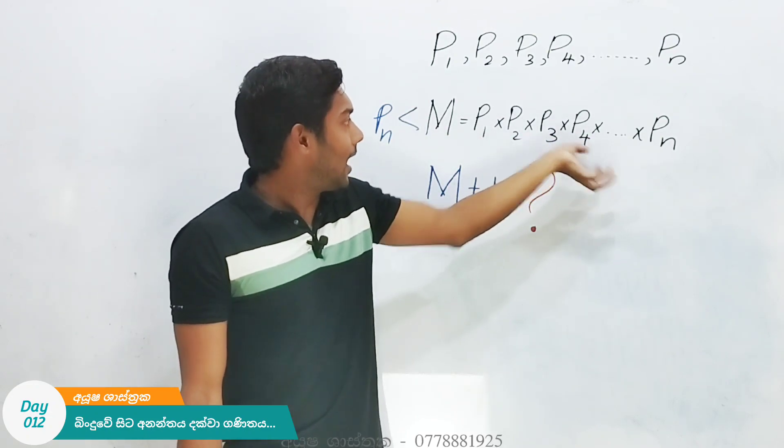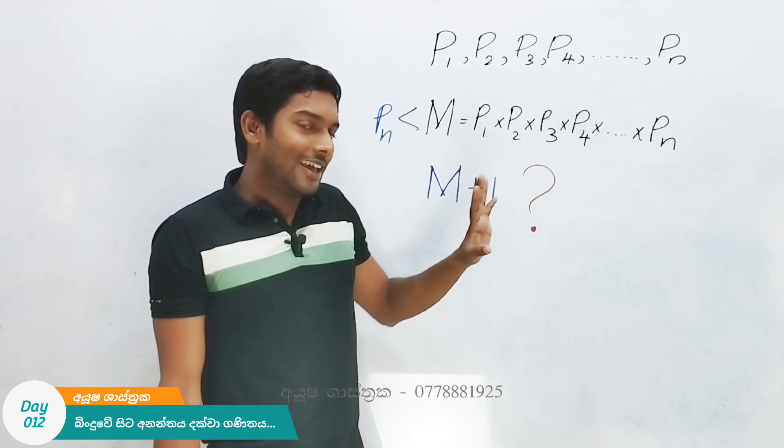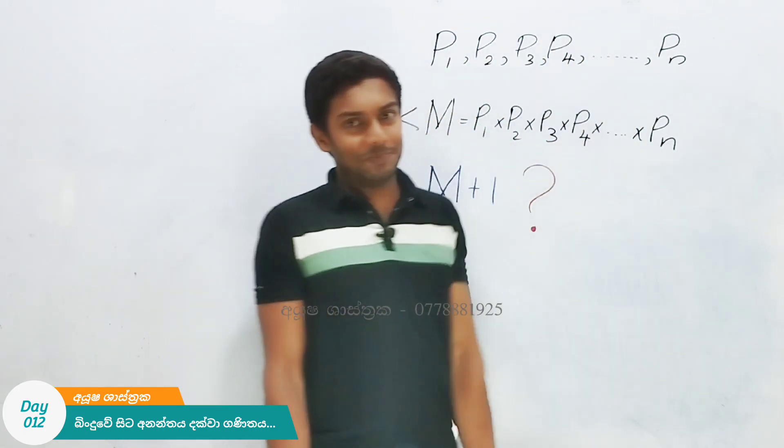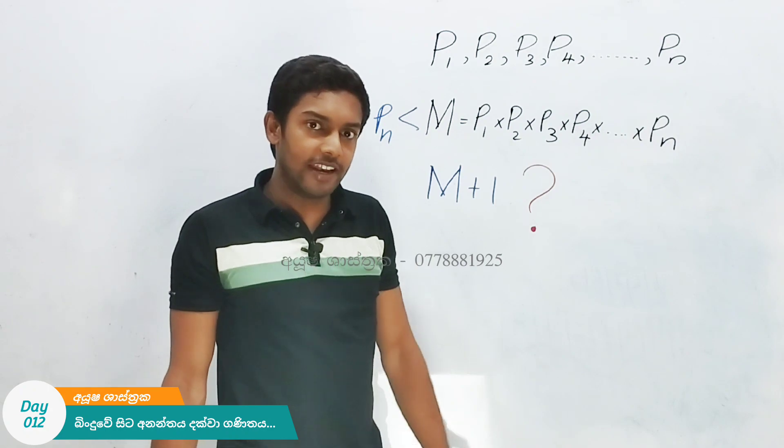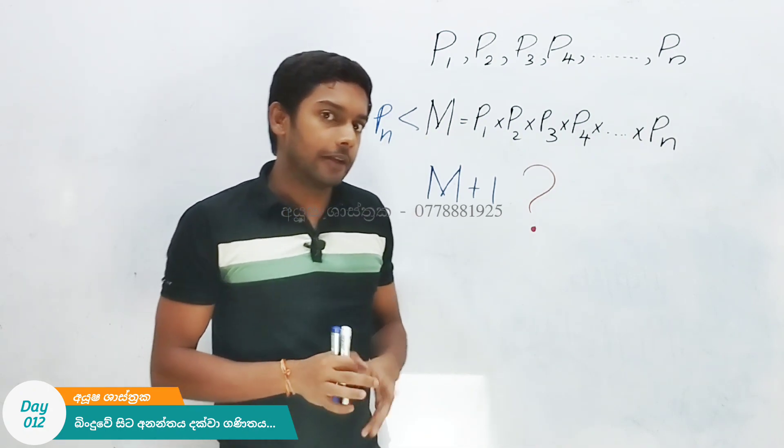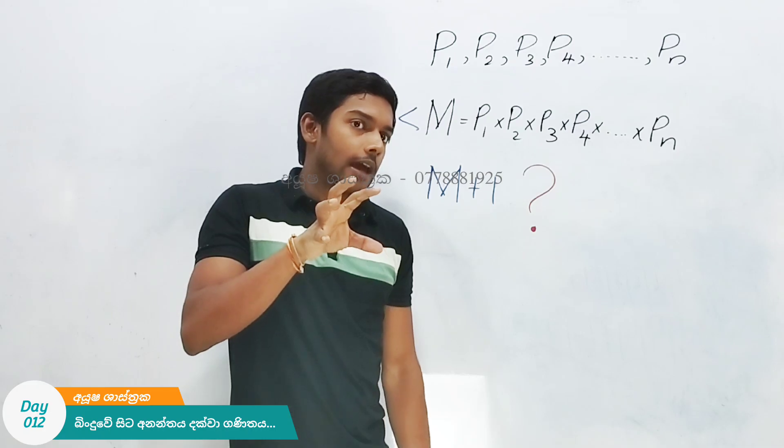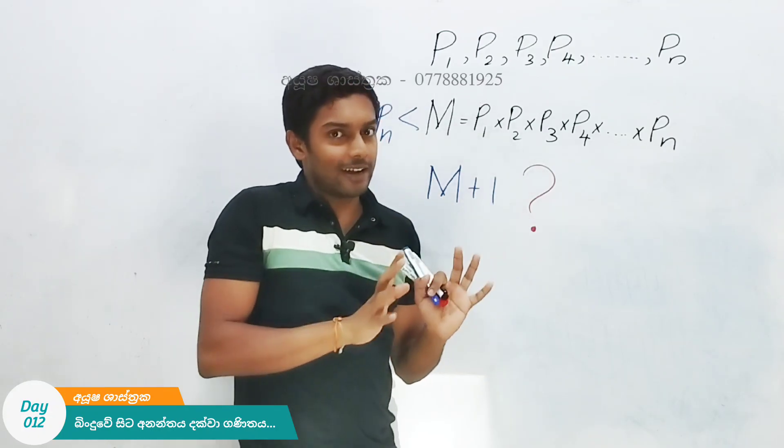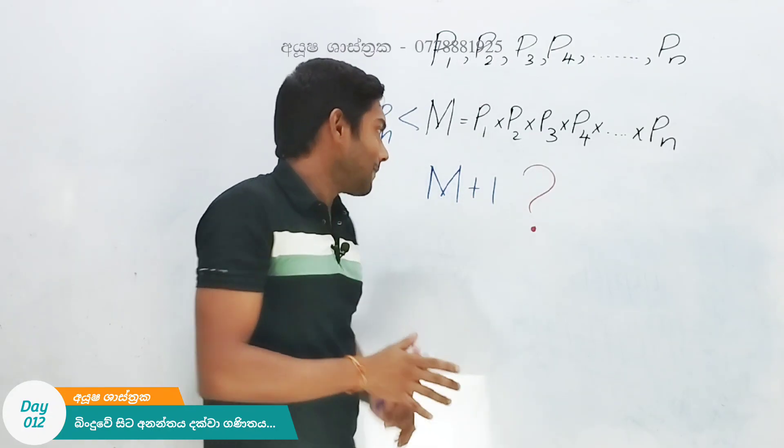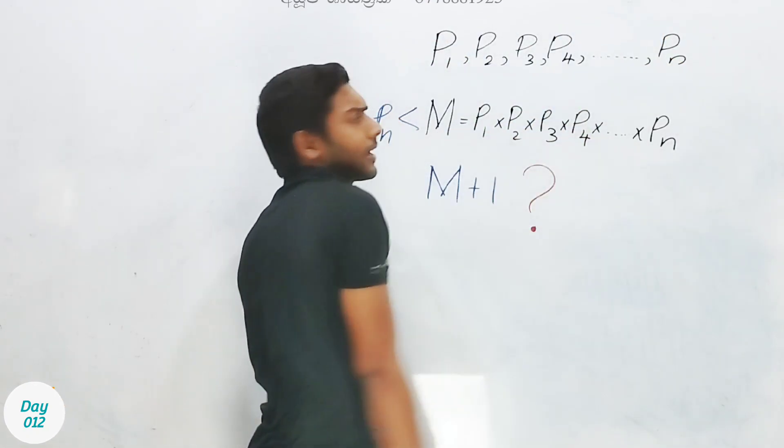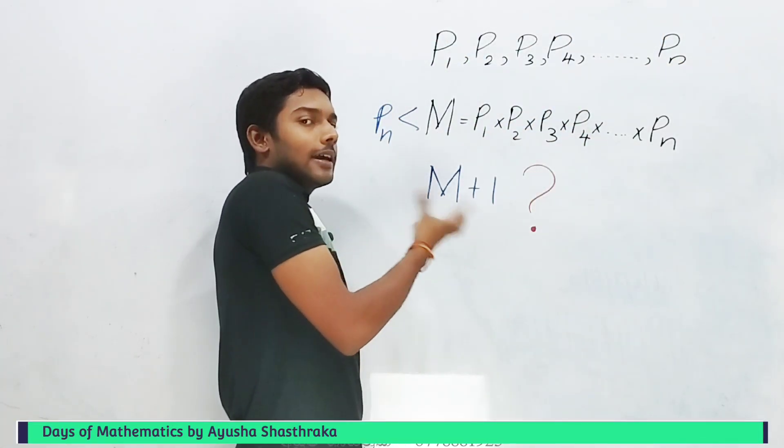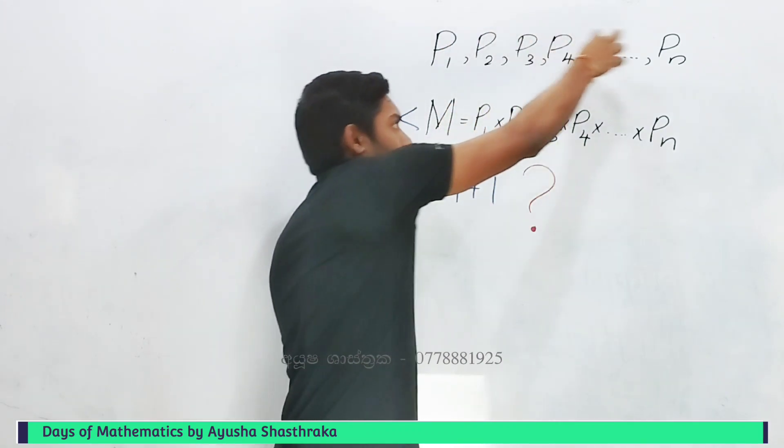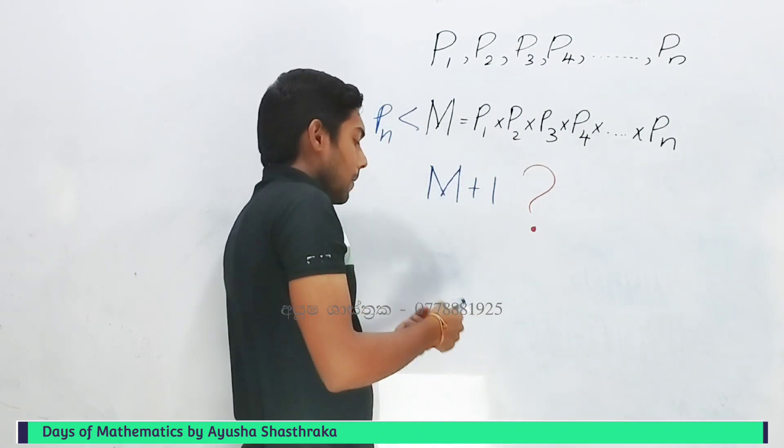The second step involves finding whether this number is divisible by our original primes. When we make this calculation, we can see what happens. Let me make this clear - when we add one to our product, we get an important result.